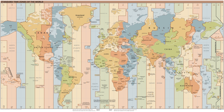Standard Frequency and Time Signal Emissions, and is based on International Atomic Time with leap seconds added at irregular intervals to compensate for the slowing of the Earth's rotation. Leap seconds are inserted as necessary to keep UTC within 0.9 seconds of the UT1 variant of universal time. See the 'Current Number of Leap Seconds' section for the number of leap seconds inserted to date.